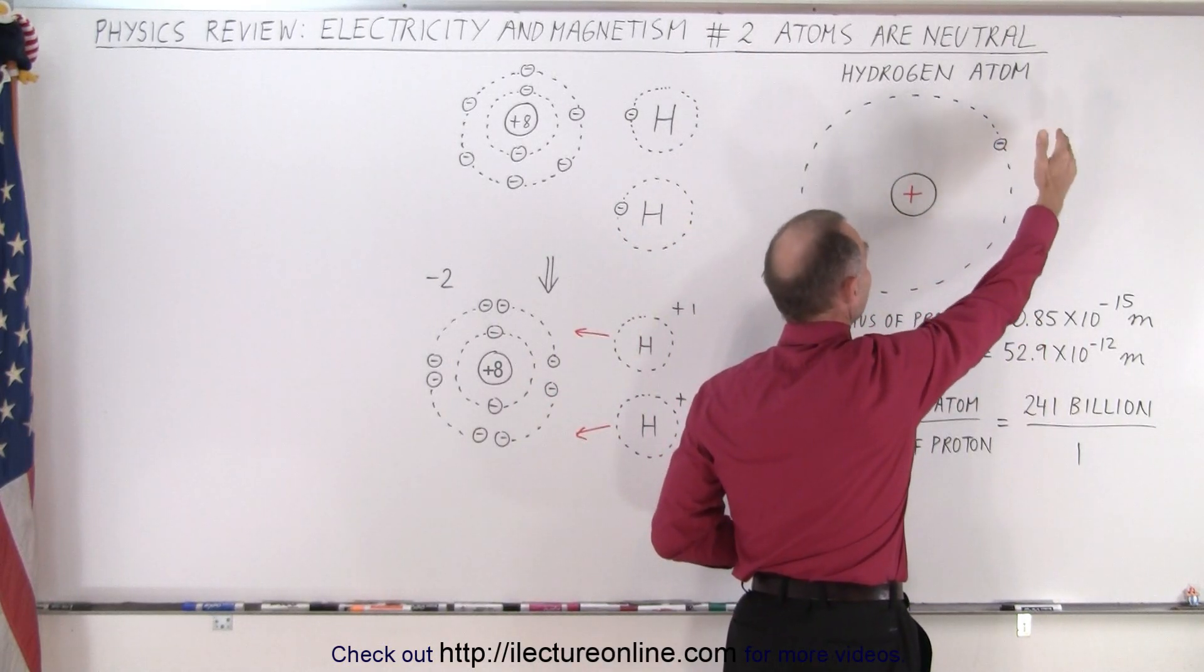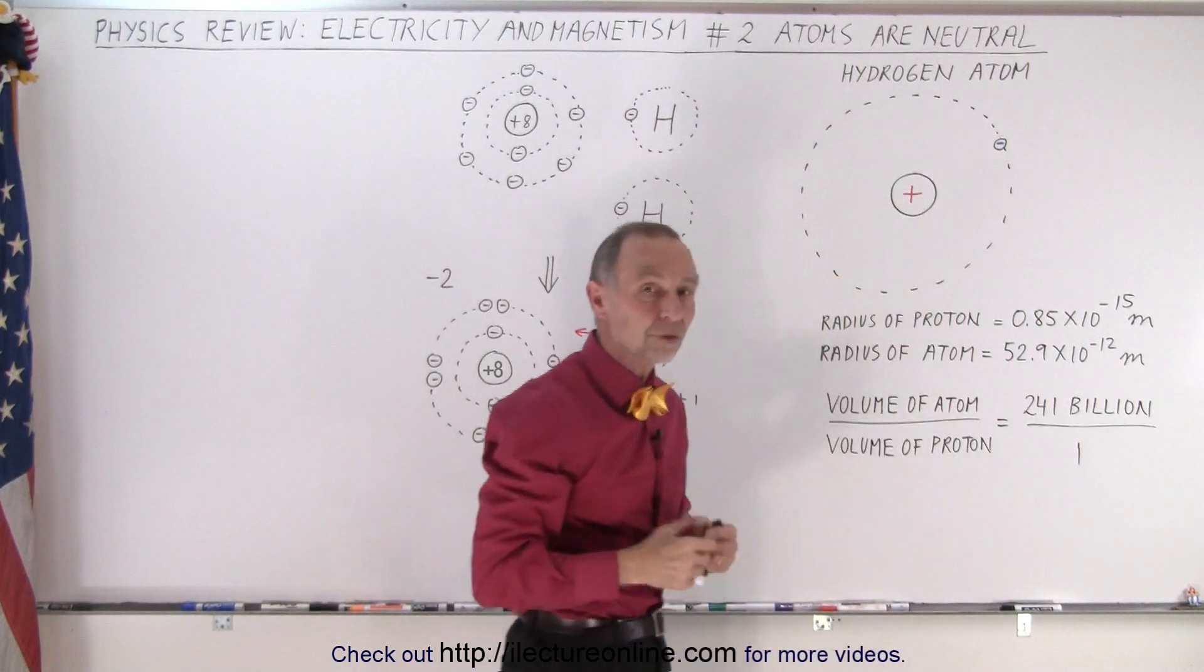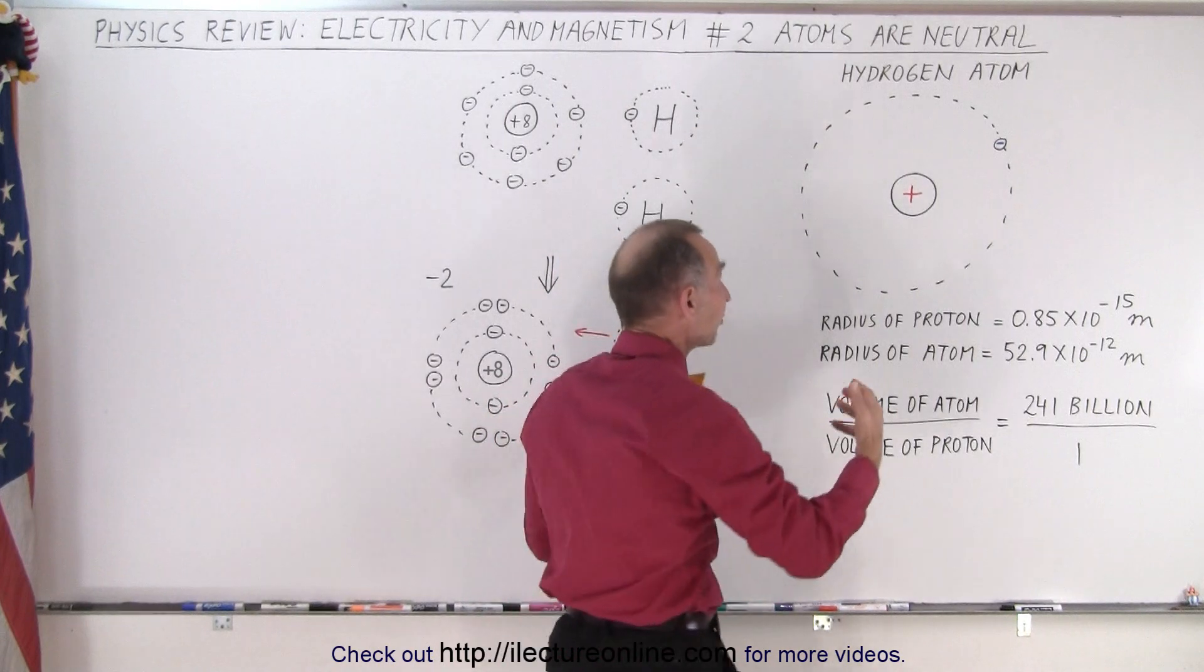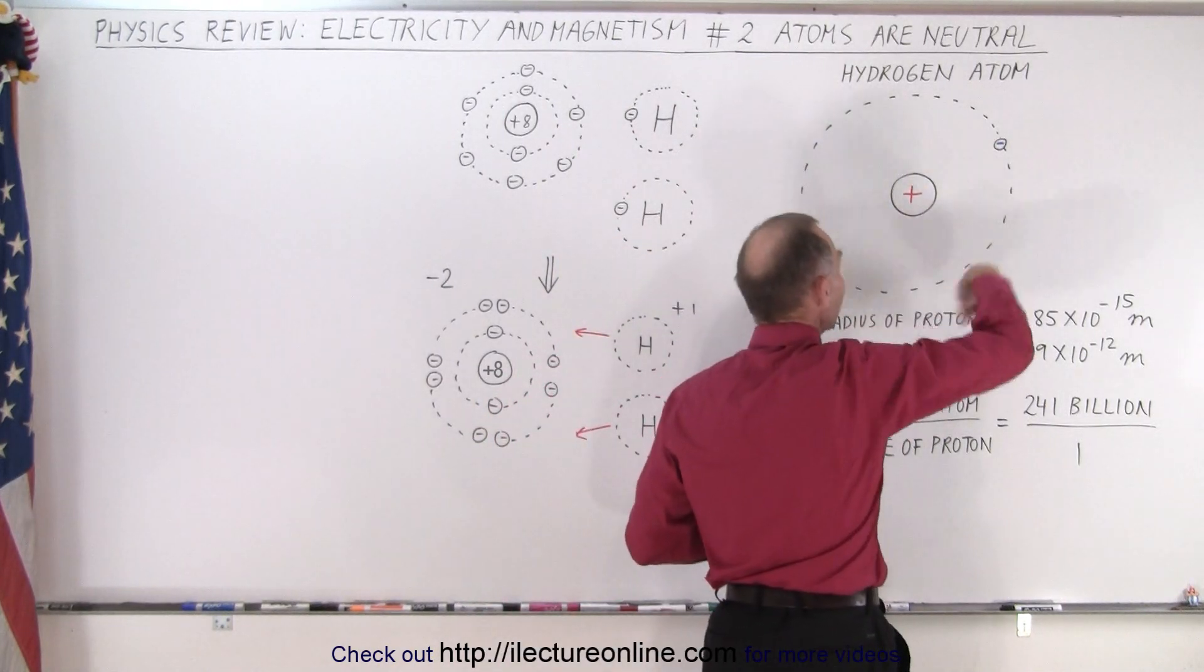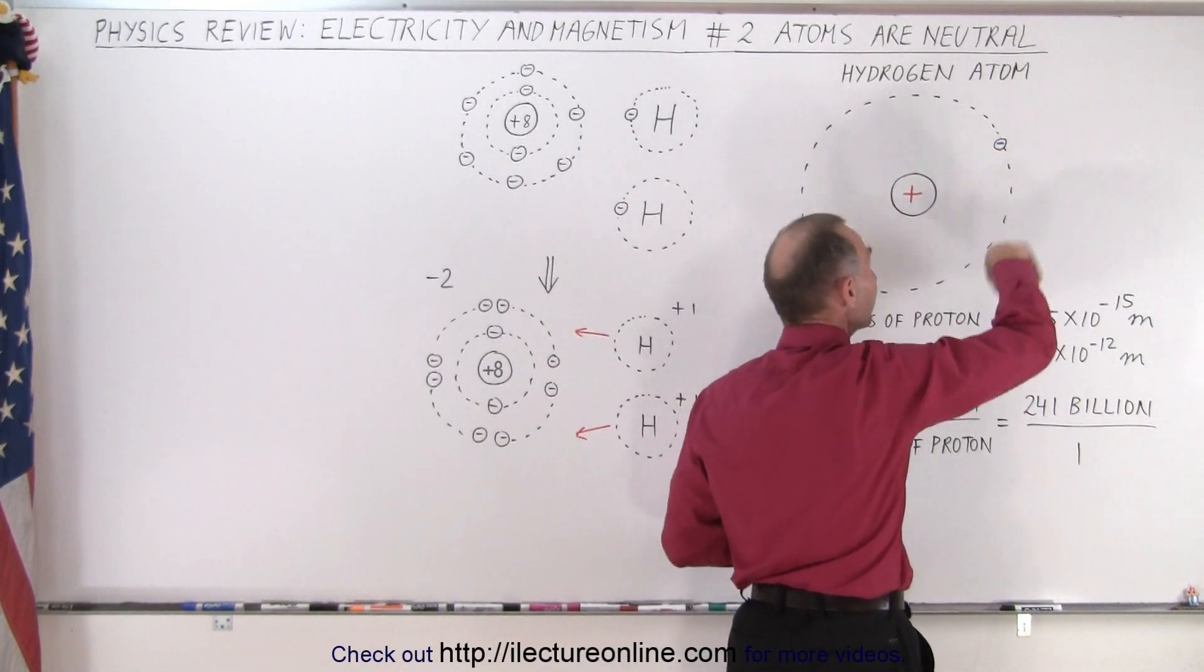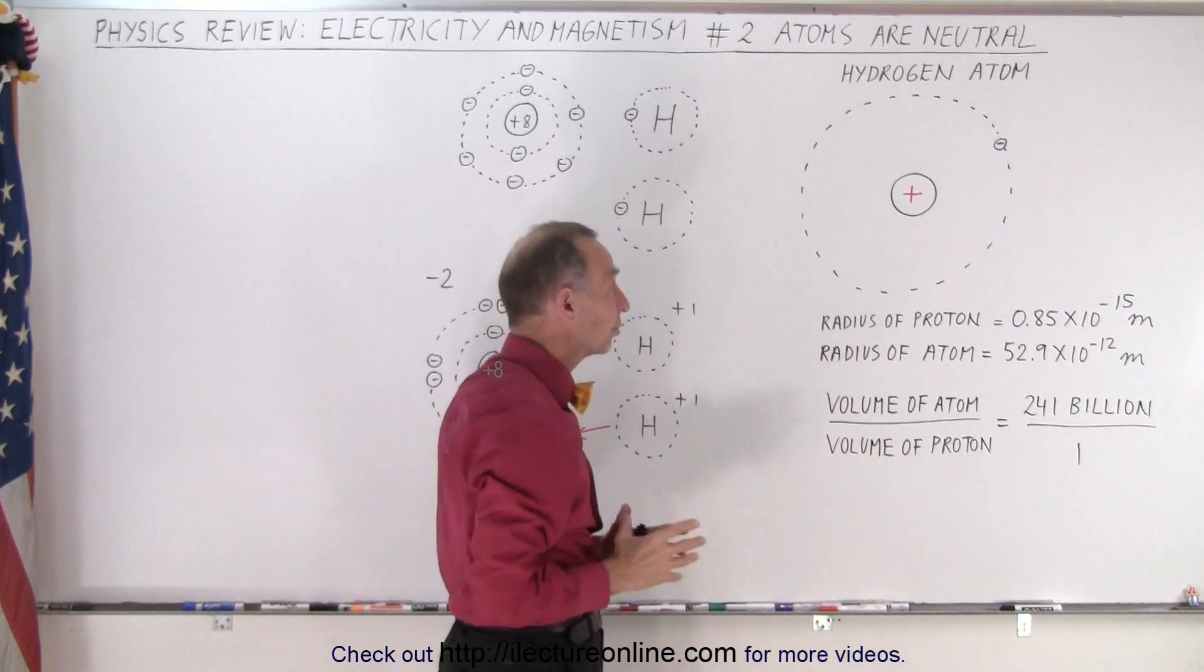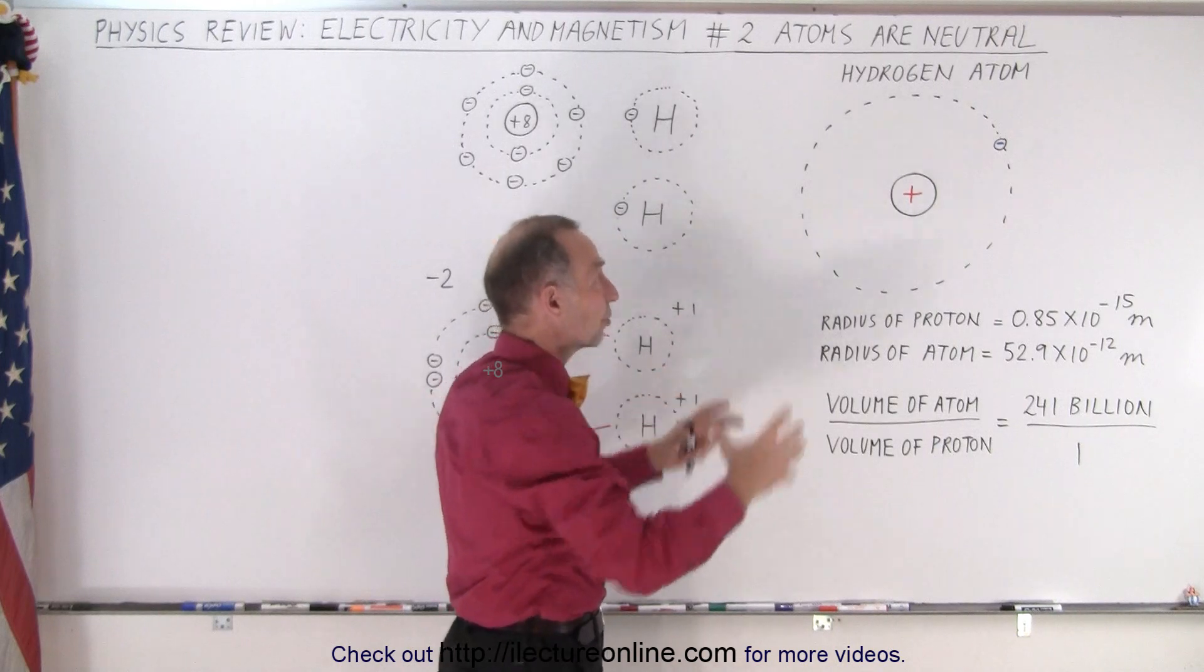So if the electron wasn't moving, it would almost instantly collide with the nucleus, with the proton, because they attract one another. But that's prevented from happening by the electrons zipping around the nucleus at very high speed, and it makes orbits around the nucleus in all different directions, at random, so to speak, on average, in every direction.